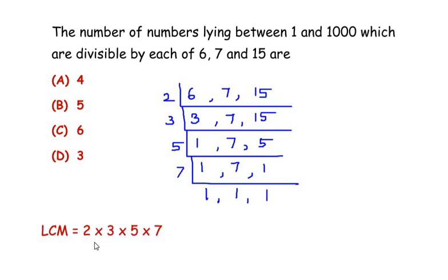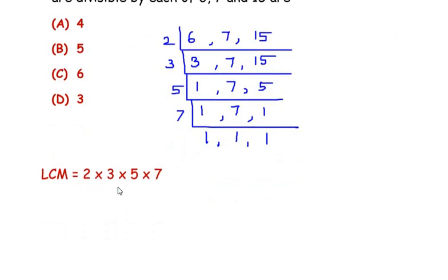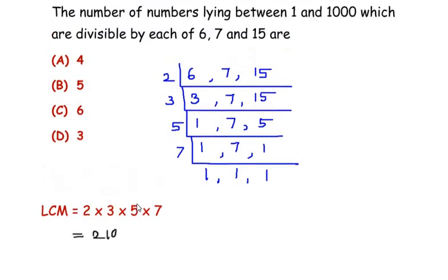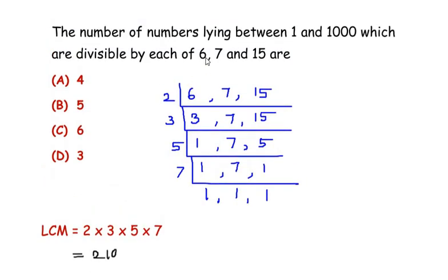Now let us write down the lowest common multiple. The LCM is the product of all the factors we have obtained: two times five is ten, and ten times twenty-one is two hundred ten. So we get the LCM as two hundred ten. Two hundred ten is divisible by six, seven, and fifteen, so its multiples are also going to be divisible by six, seven, and fifteen.